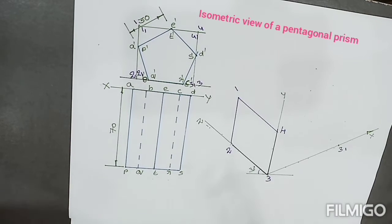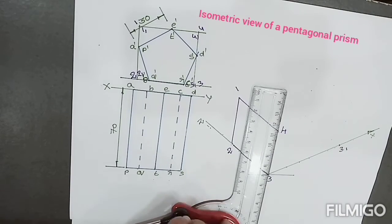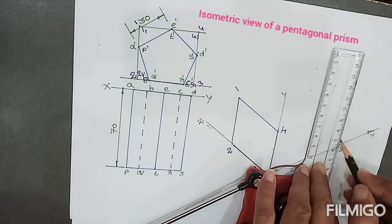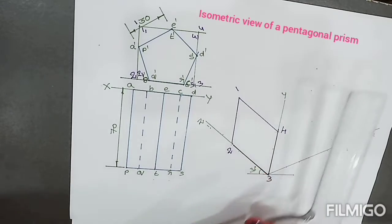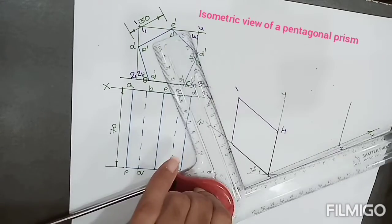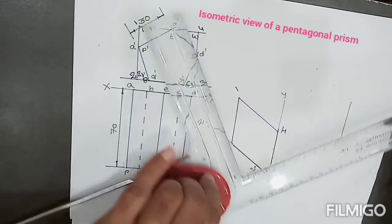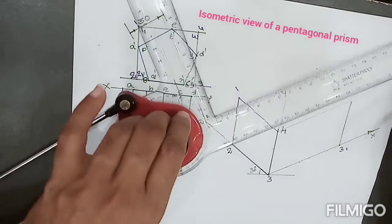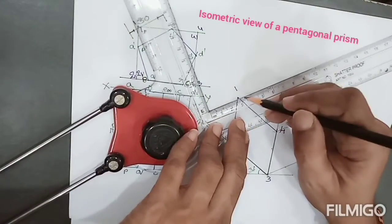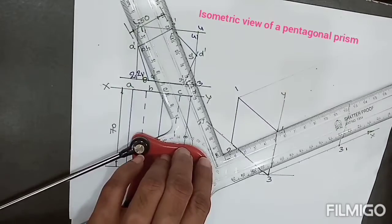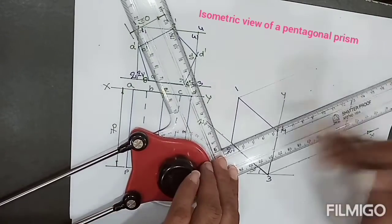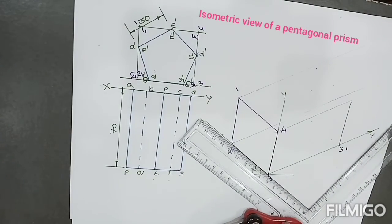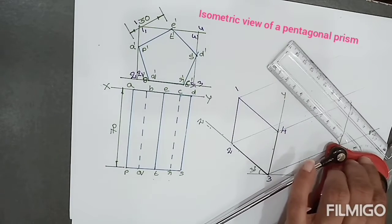Then parallel to 3-4 passing through 3 prime, draw line. That means we are constructing the box. The method itself is called box method. Similarly, parallel to 3 prime-3 passing through 4, draw line, and passing through 1 also draw line, then passing through 2 also draw line.